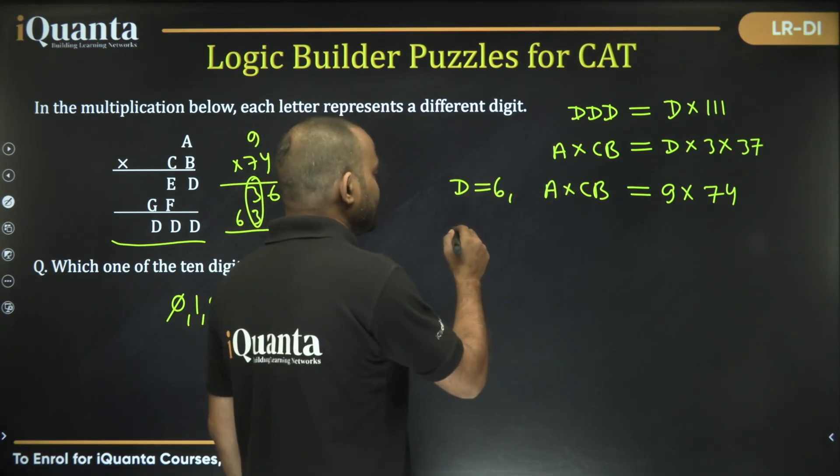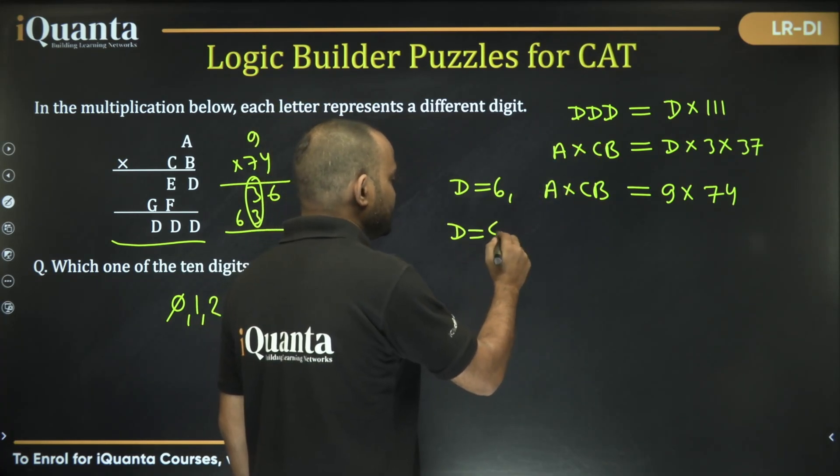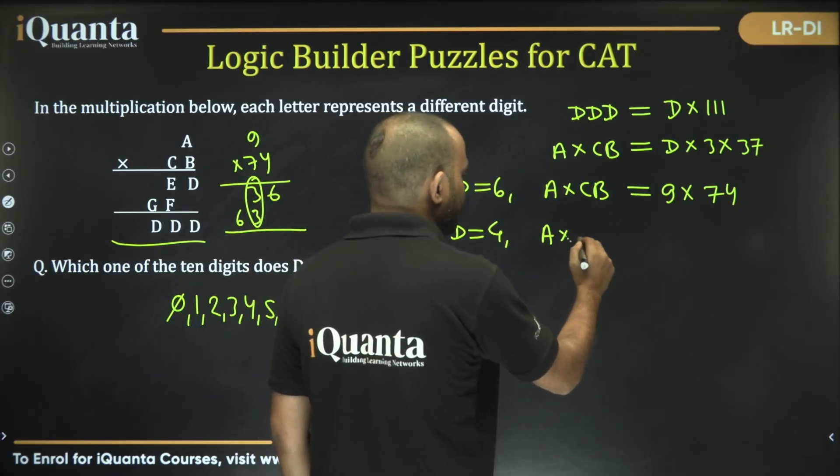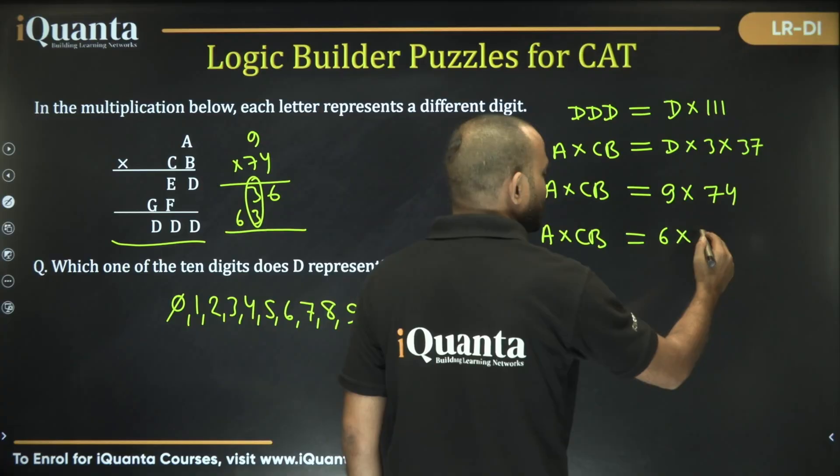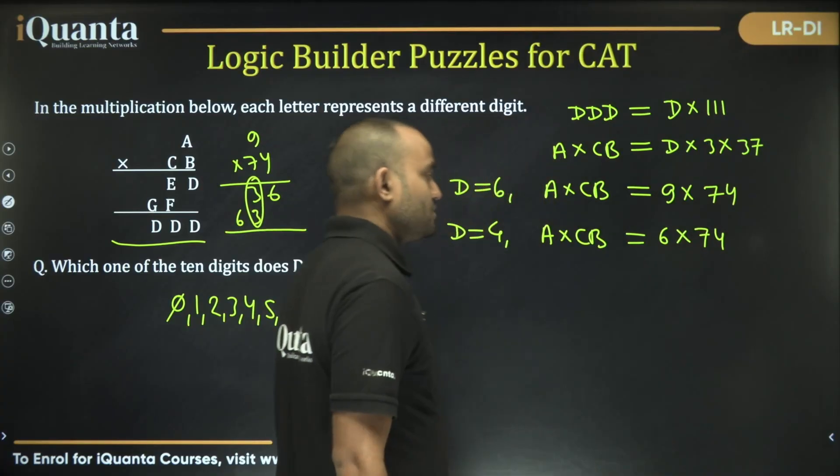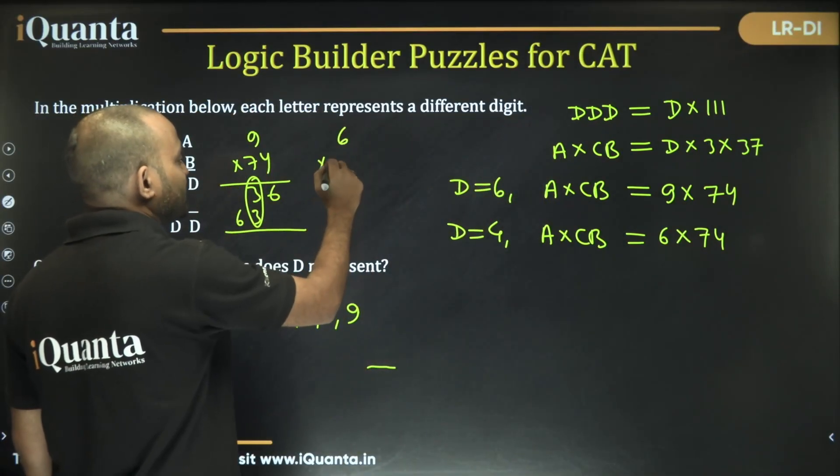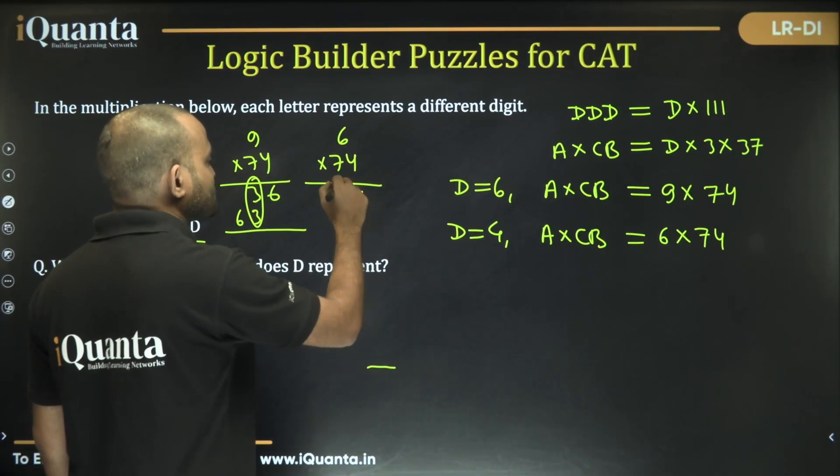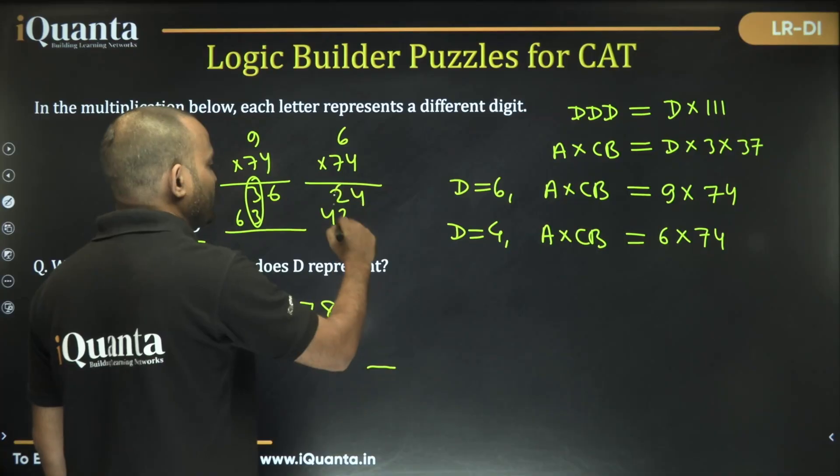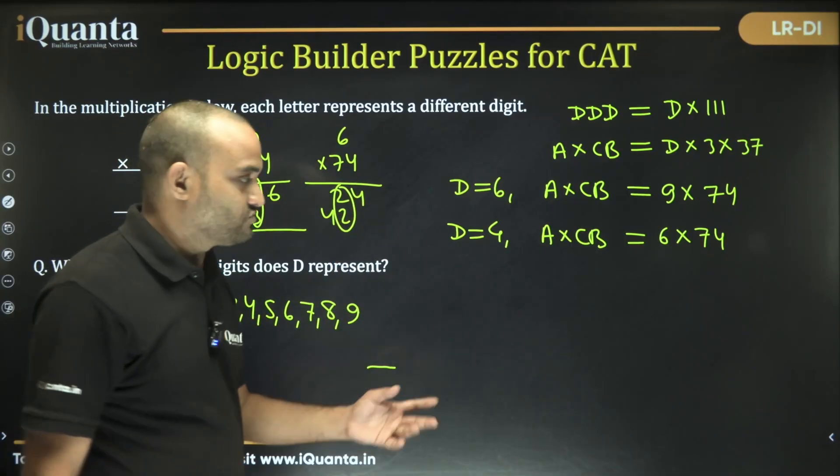Now can I take D is equal to 4? Yes, I can take D is equal to 4. In that case, A into CB, I will distribute 1, 2 to this, 6 and this will become 74. Is that our answer? Let's check this: 6 into 74. So 24 and 42, again we are getting these two as same digits, not possible.